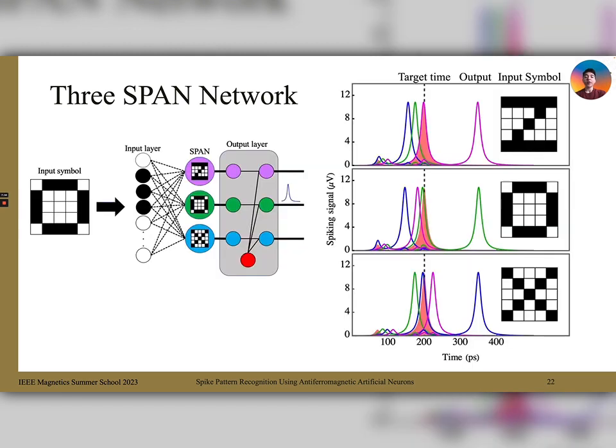Shown here is the output spike pattern of a three-SPAN neural network. The blue, green, and magenta spikes correspond their SPANs trained to different symbols. You can see that the clock neuron, the red spike, spikes at the target time along with a single SPAN. Because the other SPANs do not spike at the target time, there is only one output that corresponds to the recognized symbol. This neural network allows for multi-symbol recognition with a clear output in just a few hundred picoseconds.